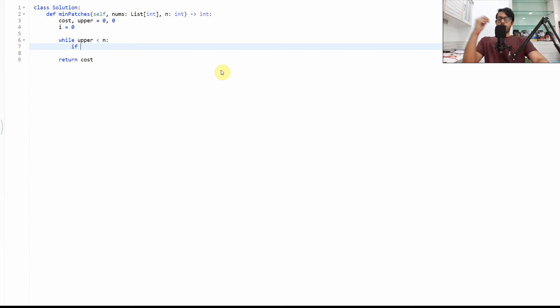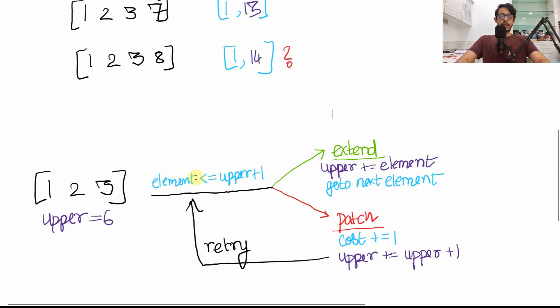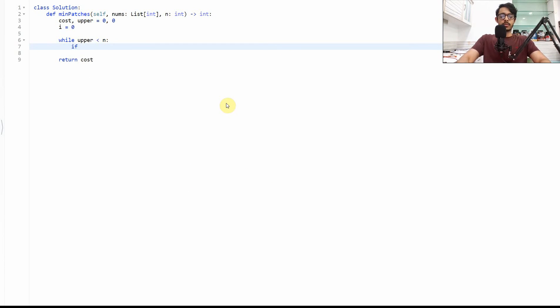Okay now we'll write the if condition. If element, what is the element? Element less than equals to upper plus one. So we'll write element less than equals to upper plus one. Element by the way is what? Element is the current number we are pointing at. And just for a quick sanity check we'll also ensure that i is always less than the length of nums otherwise it will go out of bounds.